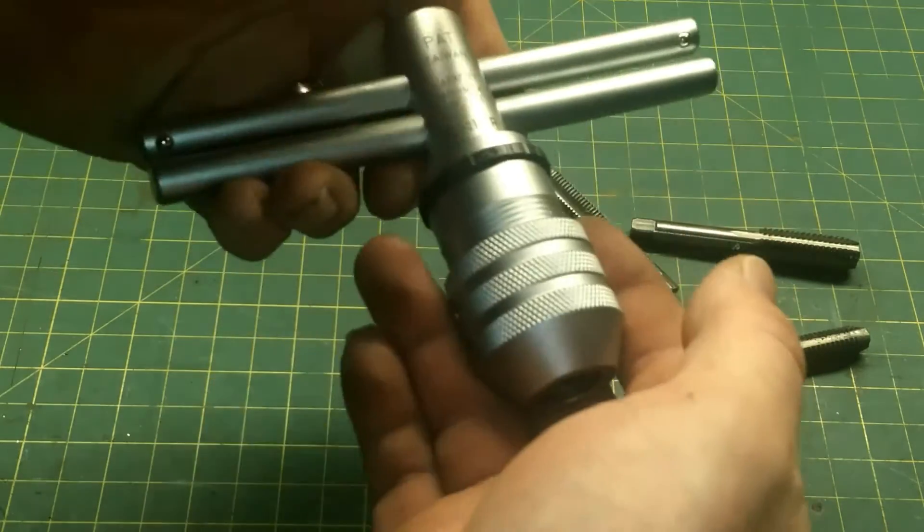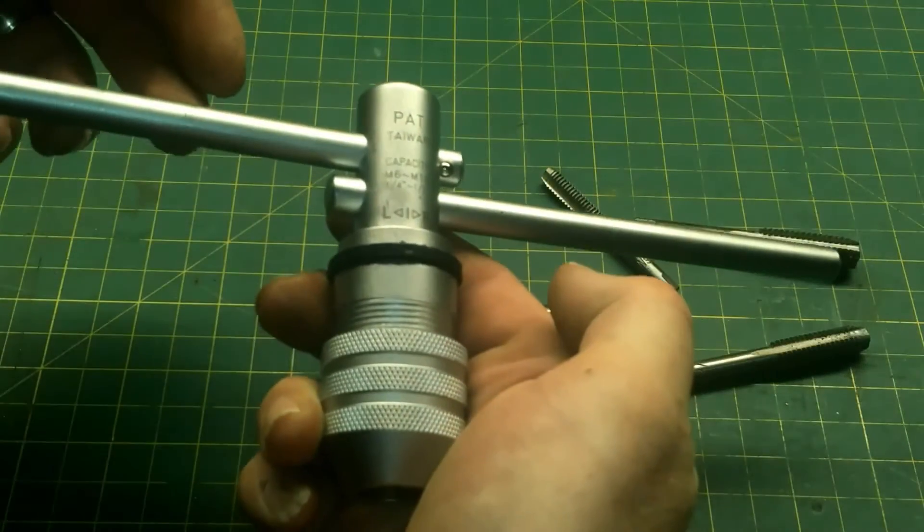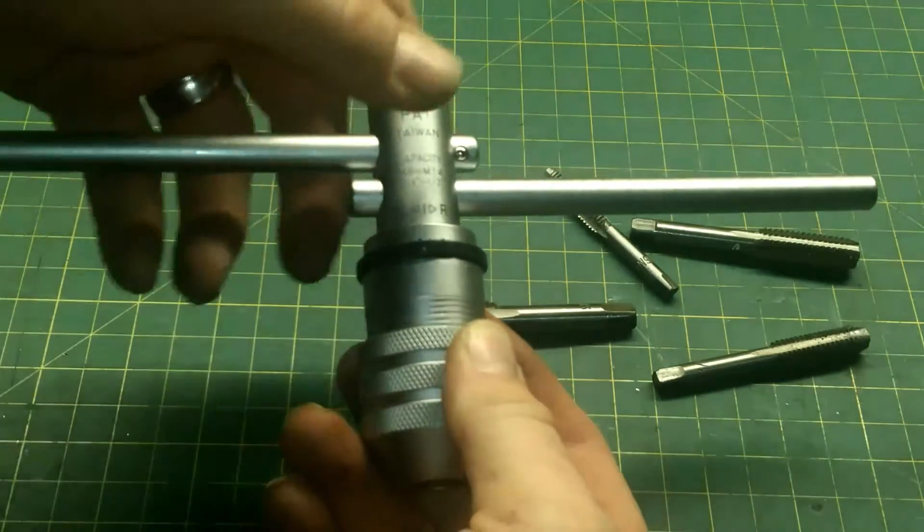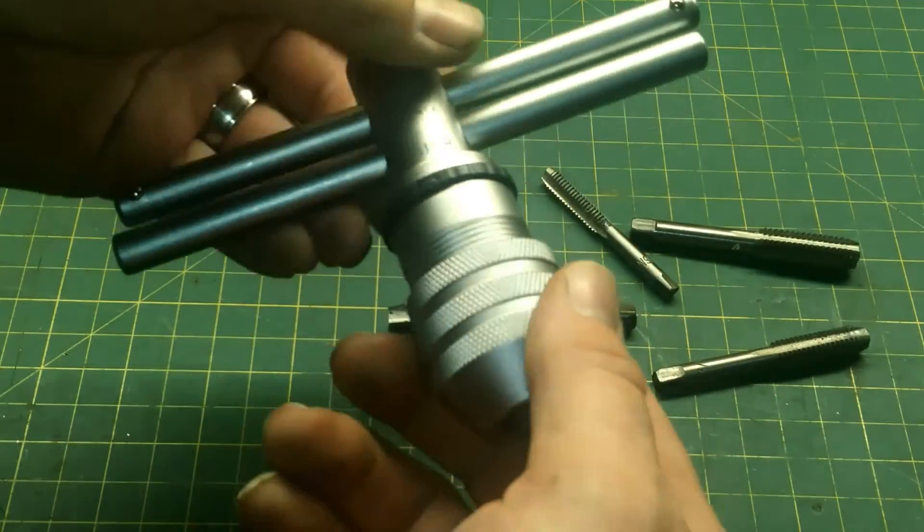Pretty cool. And it's pretty beefy, it's pretty heavy. And then if you need some more torque you can slip these out. So if you're using a bigger tap obviously you'll pull these out to get more torque. A little tap you probably don't want to do that or you'll bust a tap.